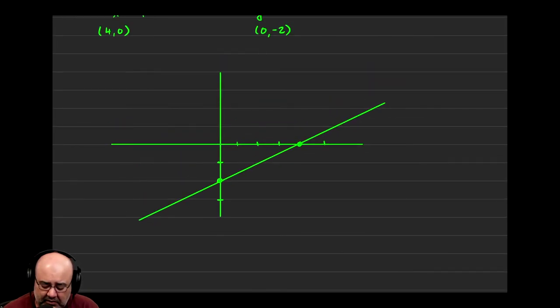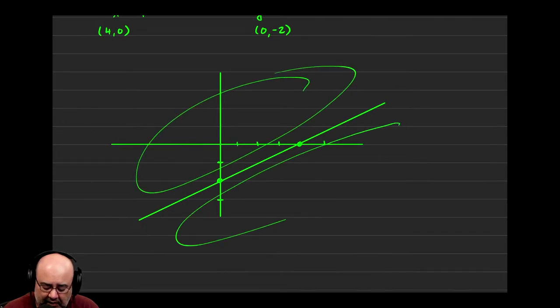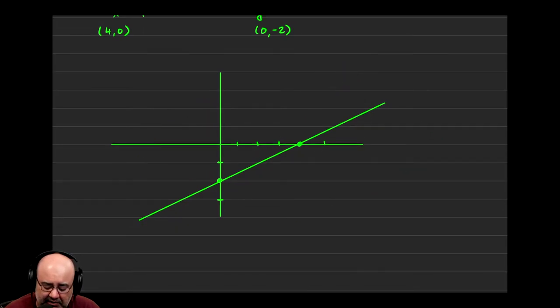So now the xy plane is split into two halves: up and to the left, or down and to the right. The question becomes which side contains all the solutions. Should we shade up into the left, or should we shade down and to the right?